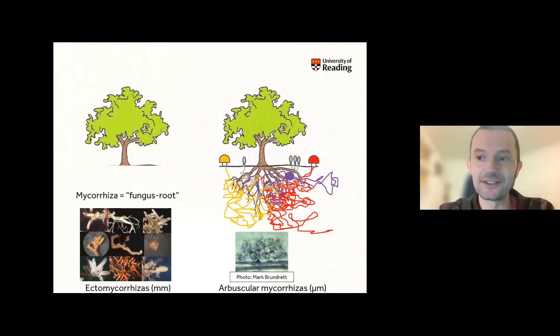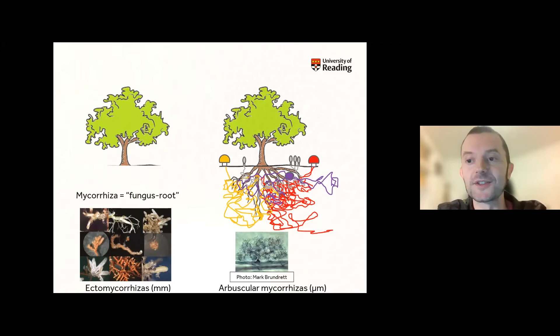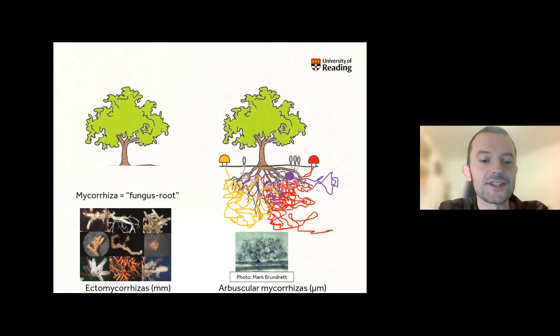What we're really interested in in the field of mycorrhizal research is these fungal species that form symbiotic associations with the roots of plants. Mycorrhiza — if you didn't know the term before — literally means 'fungus root,' and a mycorrhiza is an organ that is formed jointly by a plant and a fungus. On the left we have some photos of ectomycorrhizas, which form a sheath around the outside of a plant root.